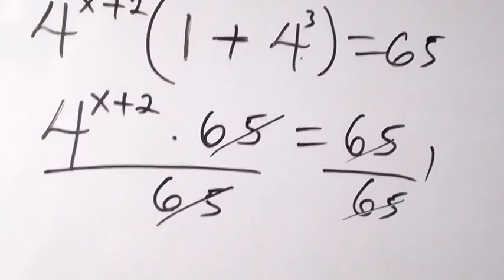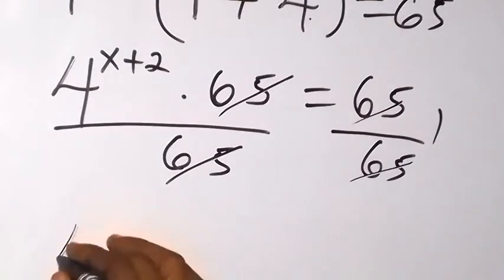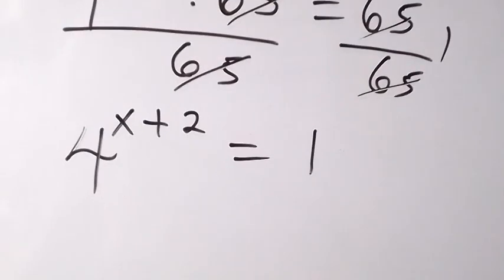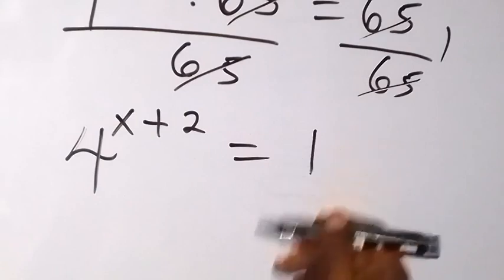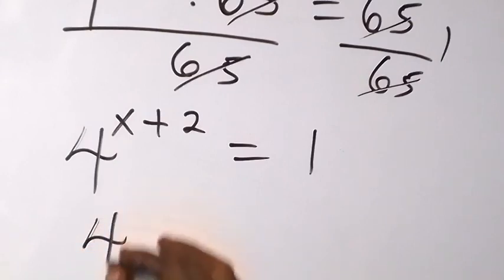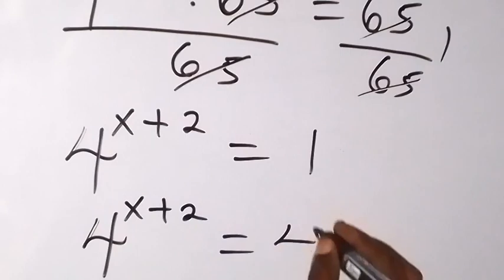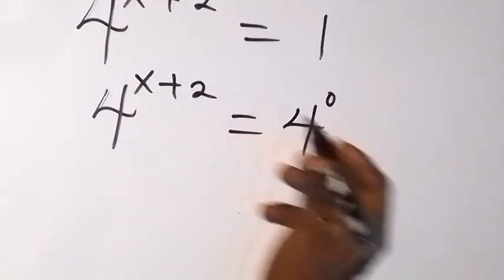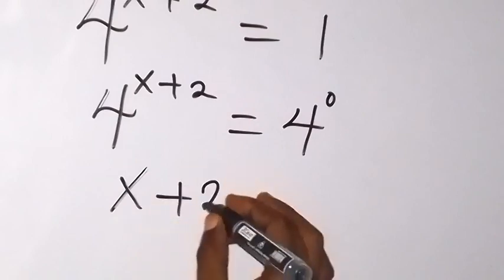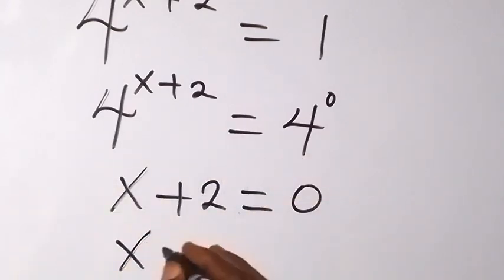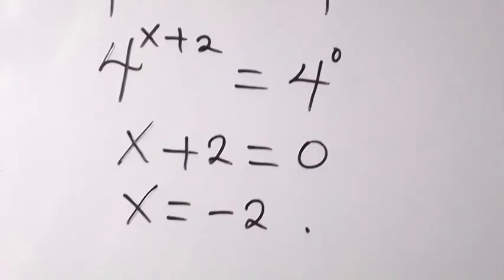We have 1 left on the right side. So now we can write this as 4 raised to the power x plus 2 equals 1. And don't forget that any number raised to the power 0 is 1, so we can write this 1 in base 4 as 4 raised to the power 0. So we have 4 raised to the power x plus 2 equal to 4 raised to the power 0. The bases are the same, so we equate the powers: x plus 2 equals 0. We solve for x by taking plus 2 to the other side: x equals minus 2.